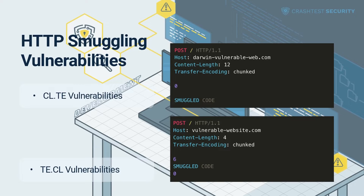HTTP request smuggling vulnerabilities arise from the fact that the HTTP protocol provides two ways to specify the boundary of a request. The Content-Length header denotes the HTTP request's message body length in bytes. The Transfer-Encoding header — a hop-by-hop header — divides the request body into non-overlapping chunks sent independently; a chunk of size zero terminates the message. An HTTP message can contain both headers, which brings up a conflict in boundary configuration. Vulnerabilities born out of this conflict are CL.TE vulnerabilities.